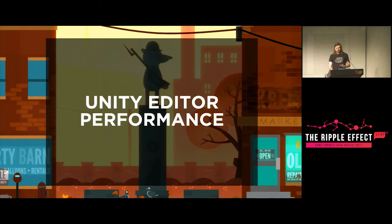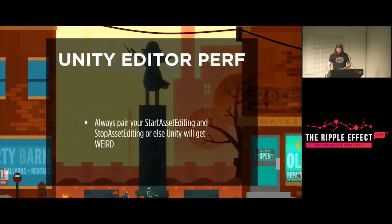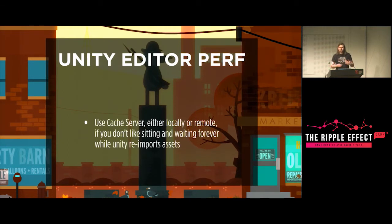The Unity editor itself must also be taken care of when writing these tools because you're making the editor do more. You have to manually unload any unused asset that you're iterating over — if you're loading, modifying, and saving, you must manually unload unused assets, otherwise your memory usage will spike and you'll crash your computer. Always pair Start Asset Editing with Stop Asset Editing, otherwise Unity gets strange. Use the cache server if you don't like waiting days to reimport tens of thousands of sprites — I've done that five times now.